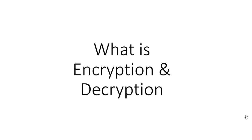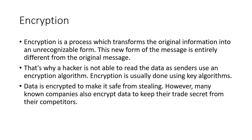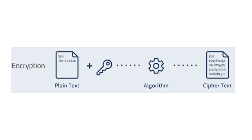We will pass data and information. For example, we will pass a plain text. Now, we will pass a password. We have a Facebook password. This is SSN 763-431616.